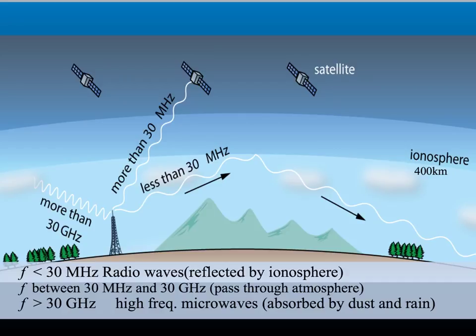Information is sent in most longer wavelength radio waves by a technique called amplitude modulation, or AM for short. The amplitude of the carrier radio waves is changed according to the amplitude of the original signal. The information is encoded in the height of the wave transmitted.